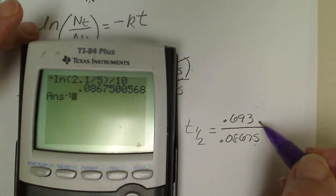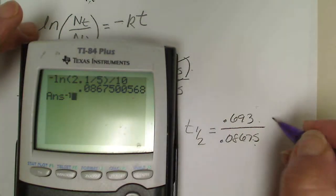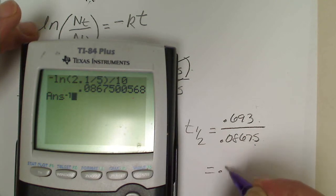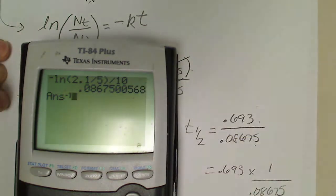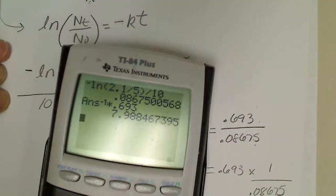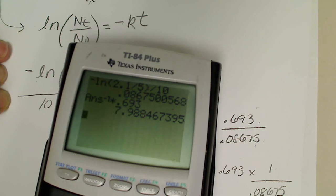I'm really taking 0.693 times 1 over the answer that I already had in the calculator. So the reciprocal of this answer times 0.693 equals 7.988.